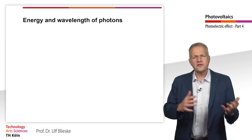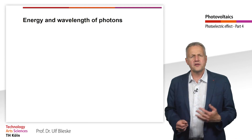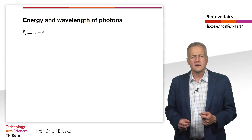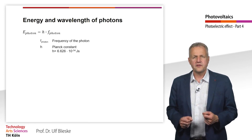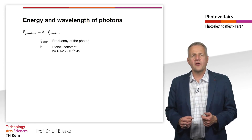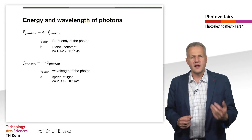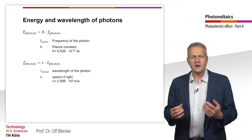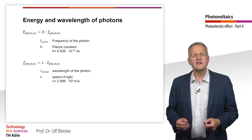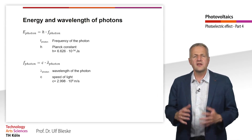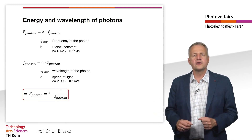Which of the three processes takes place depends crucially on the energy of the photon. This can be calculated with the help of f-photon, the frequency of the photon, where h is Planck's quantum of action. The energy of the photon can also be calculated with the help of its wavelength lambda-photon, where c is the speed of light. The wavelength of the photon is inversely proportional to the energy of the photon.